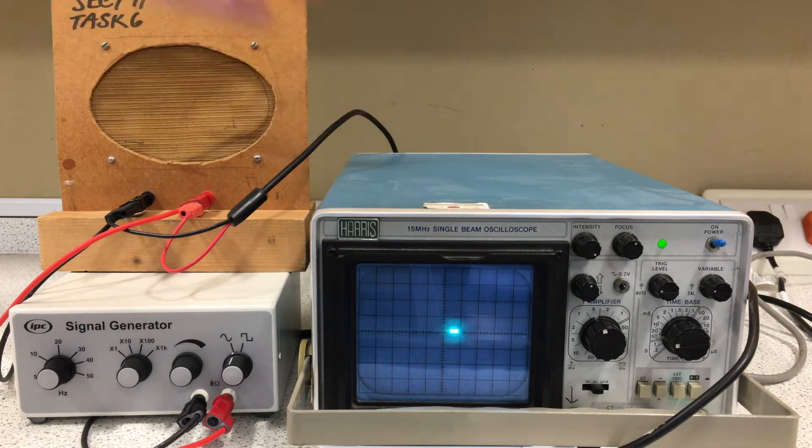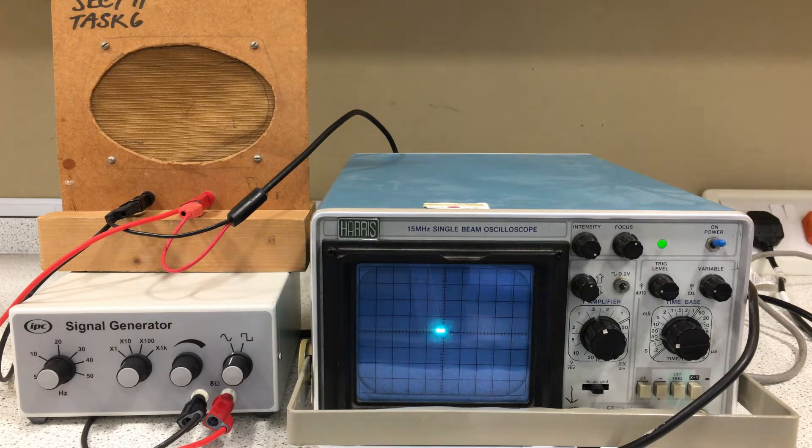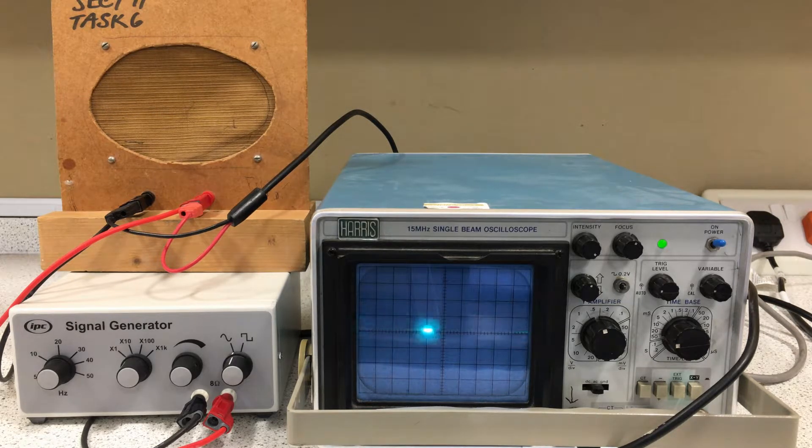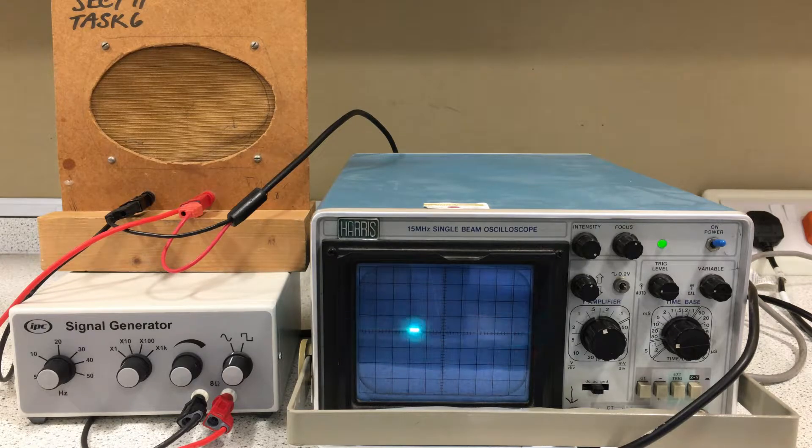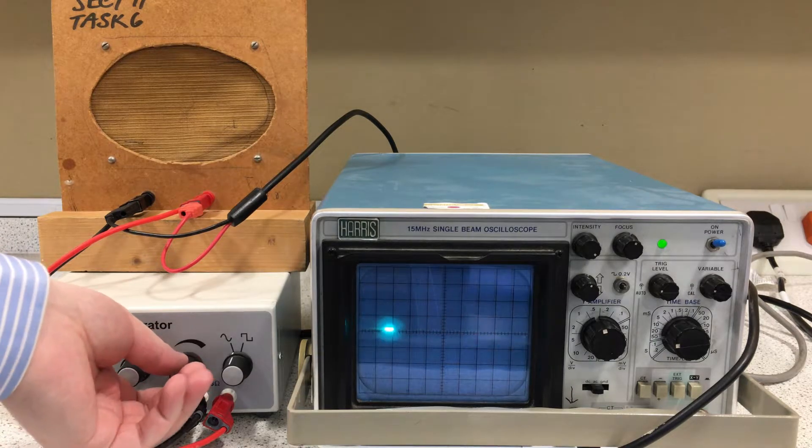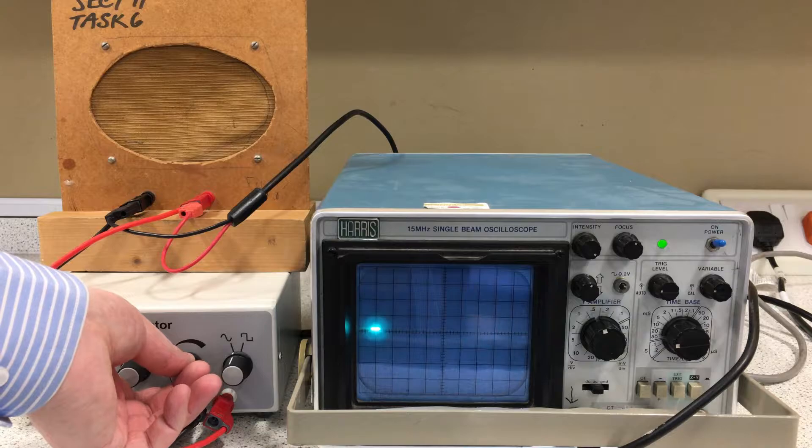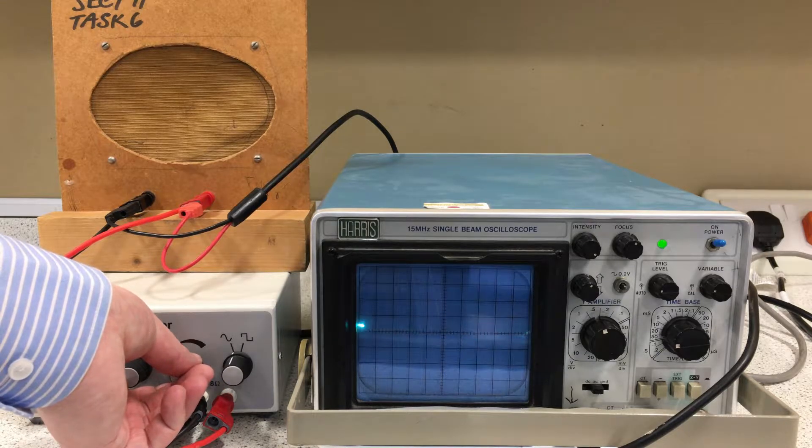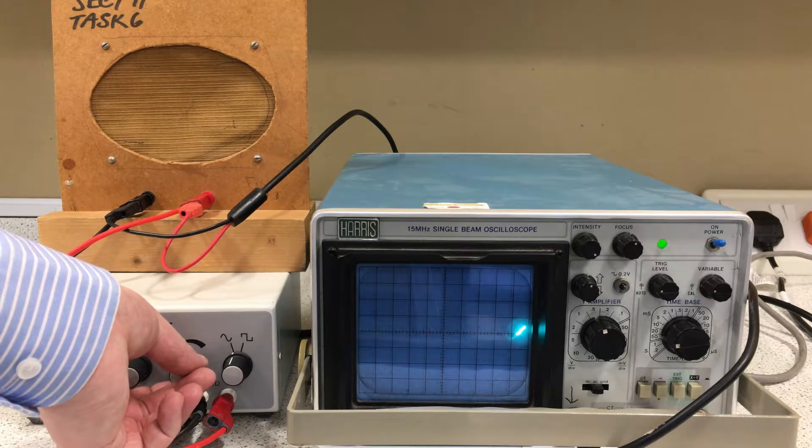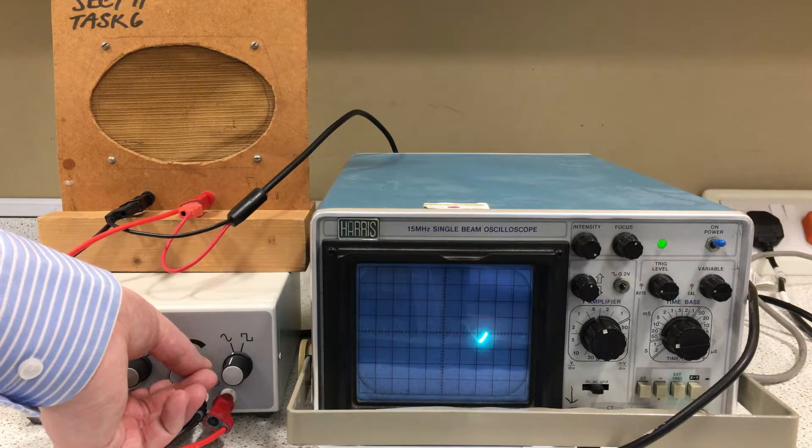This is an oscilloscope. It takes the electrical signal from the signal generator and translates that into an image that we can see. If I increase the amplitude of the signal, we will see the beam on the oscilloscope bounce up and down, tracing out the shape of a wave.